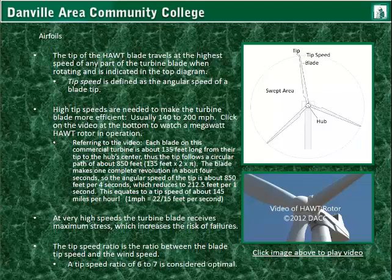At very high wind speeds, the turbine blade receives maximum stress, which increases the risk of failures. You can think about the angular momentum and how much force is pulling on the blade from the tip all the way up to the root — the tip is moving around 150 miles per hour, there's a lot of pull on that blade and it is very heavy. So they have to be structurally balanced, everything has to be checked during maintenance. There's a lot to consider with larger wind turbines regarding risks if maintenance is not done properly.